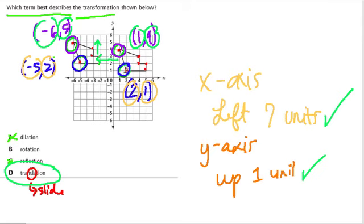If you're not feeling confident, you can try all of the points and see that they all did slide to the left 7 and up 1. And nothing else changed, just the location. Okay, hope that helped. Thank you.